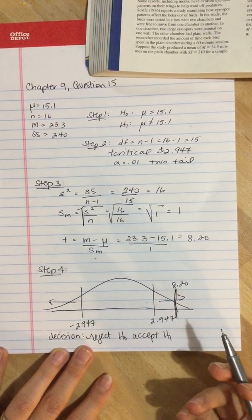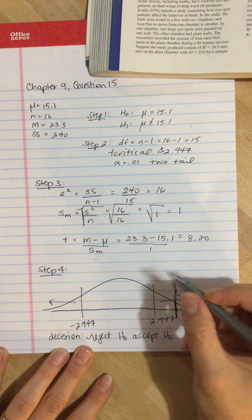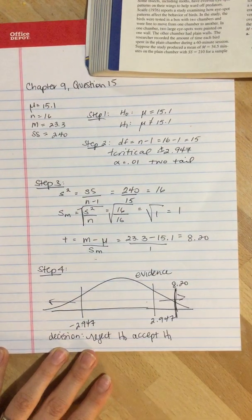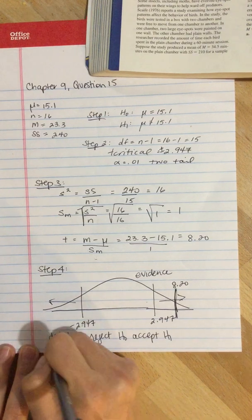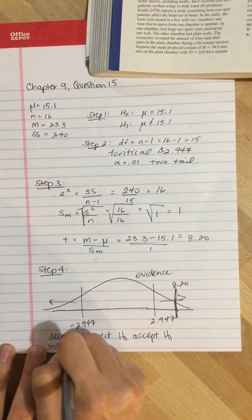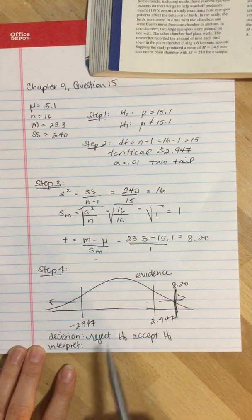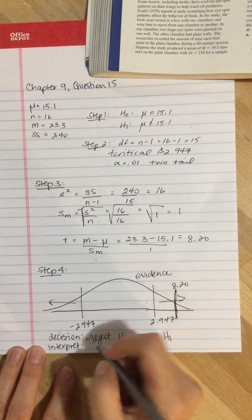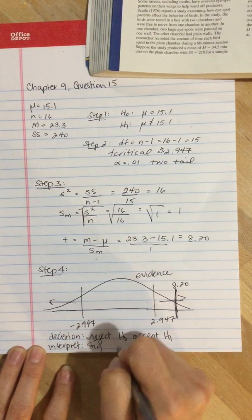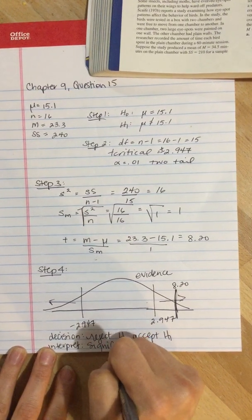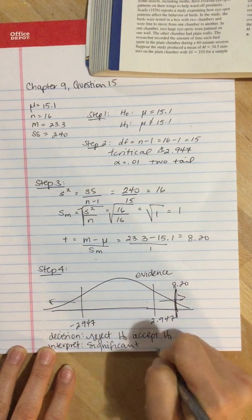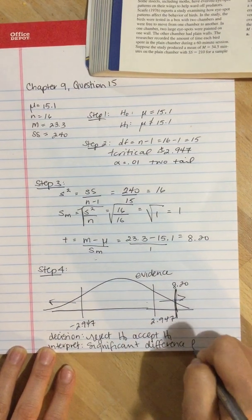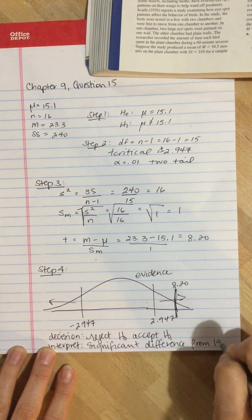The evidence or reasoning behind that decision is right here, so this is evidence. And I want you to take it a step further and interpret. If you reject the null, that means there is a significant effect, a significant difference from the 1950s.